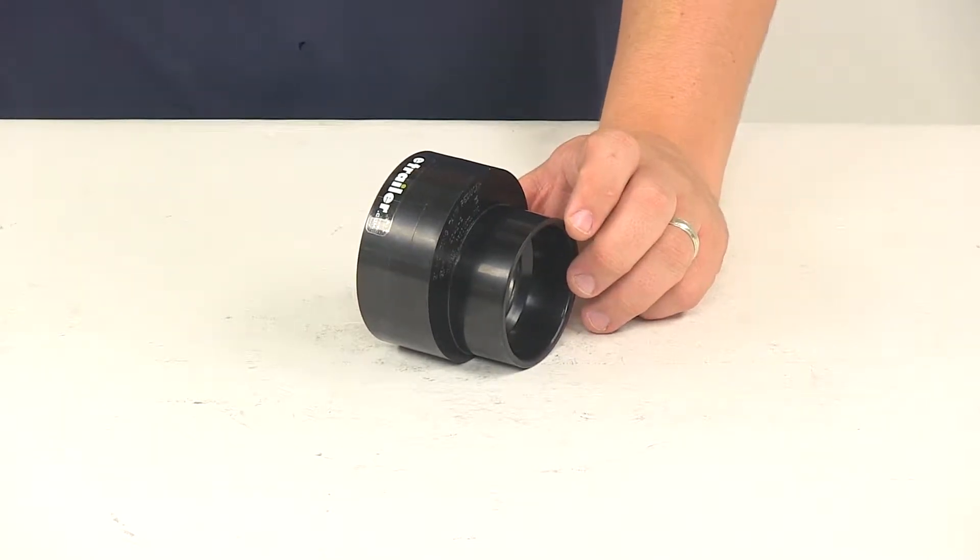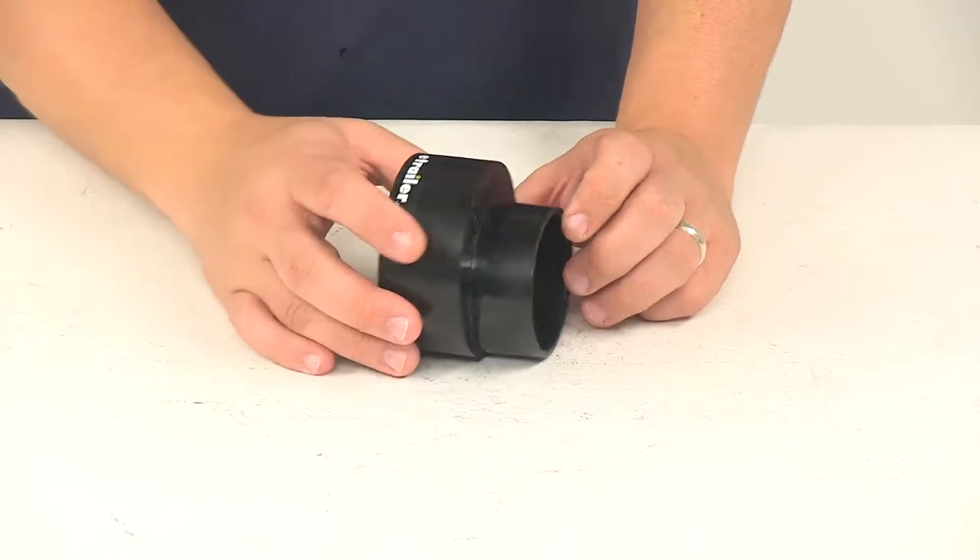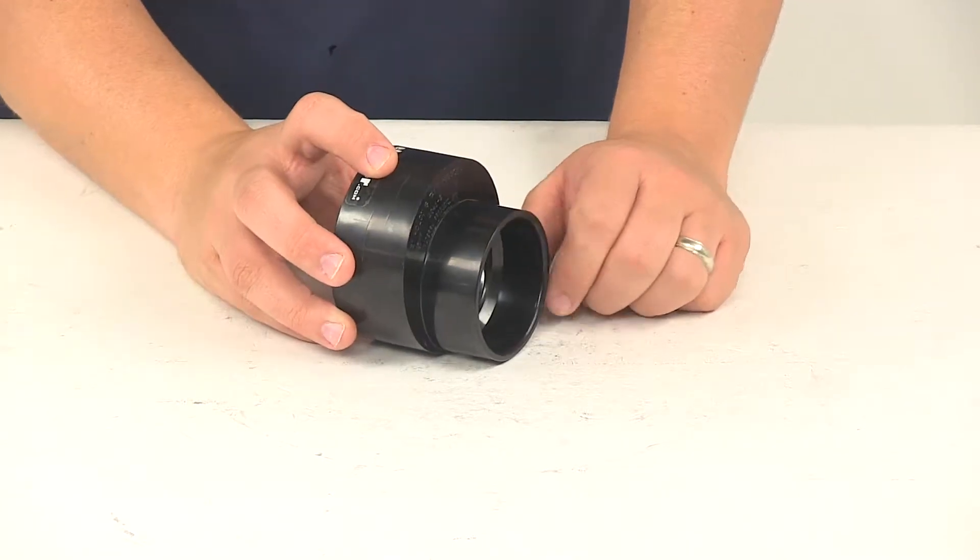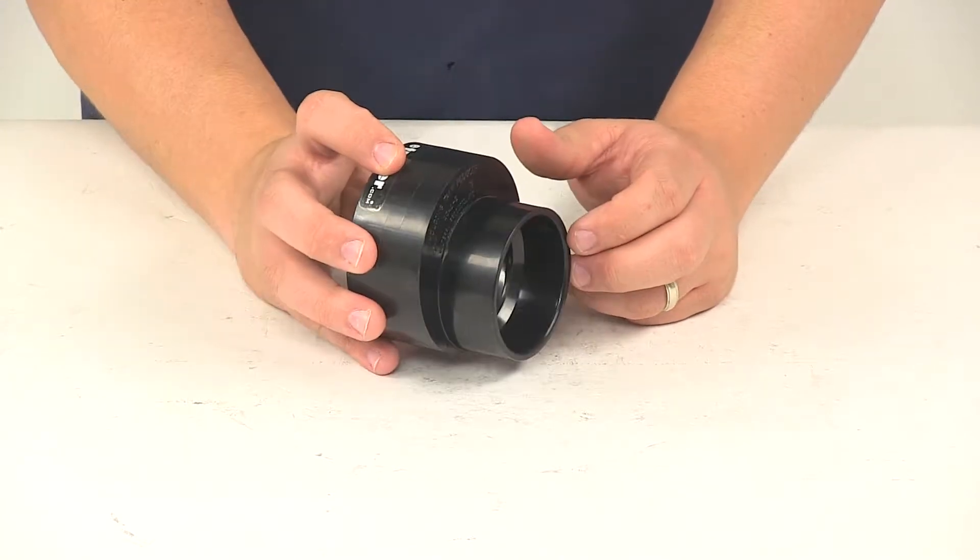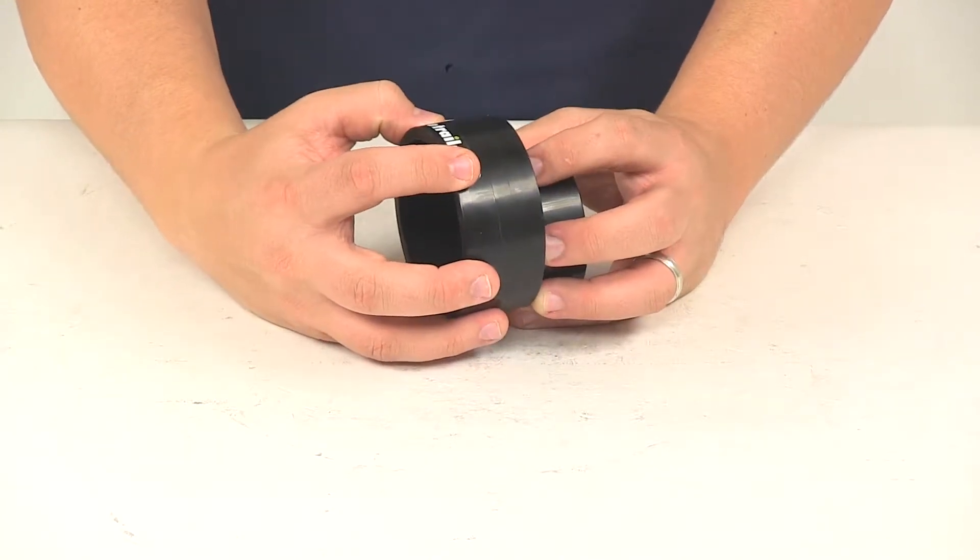Today we're going to be taking a look at the Valterra Eucentric Tank Reducer. This unit mounts in the tank outlet to reduce the opening size for a gray water tank. It can mount directly in the tank outlet or it can mount in a standard three-inch pipe.